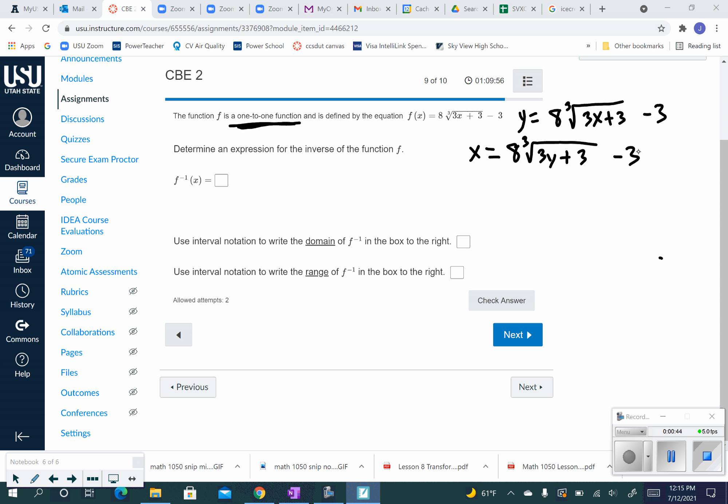Now I just have to get y by itself. And this is usually the toughest step. That means I've got to start isolating the y. So I'm going to get rid of the minus 3 since it's a separate term and add it over. So I have x plus 3 equals 8 cubed root of 3y plus 3. Get rid of the 8, I can divide by 8. So now I have x plus 3 over 8 equals cubed root of 3y plus 3.